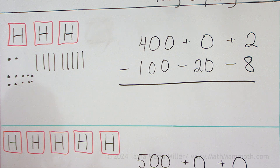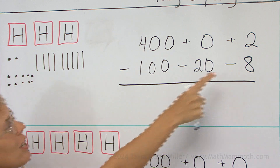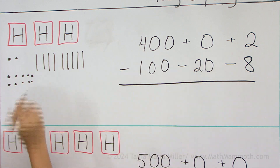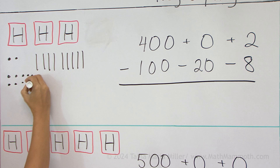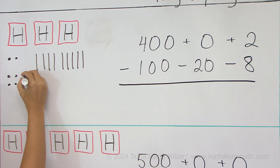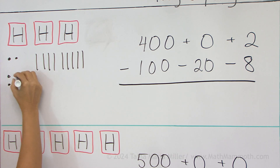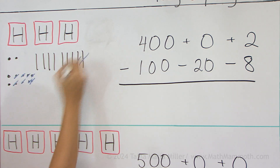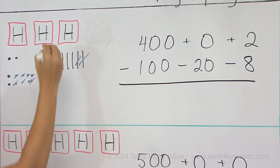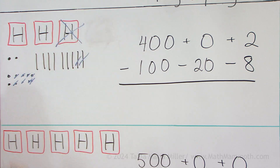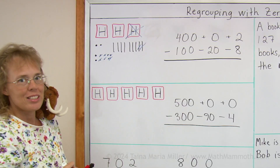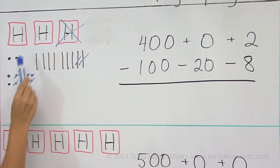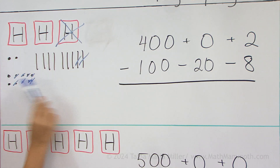When you're doing it over here, you start subtracting 8 ones in that order, and then two tens, and then 100. And now we can see the answer would be 274.